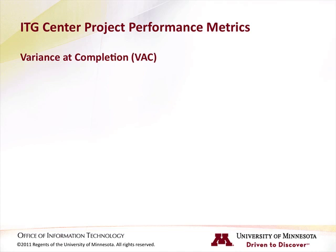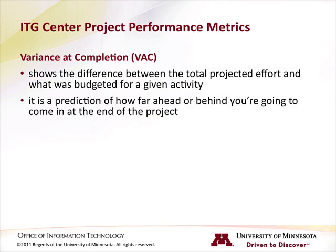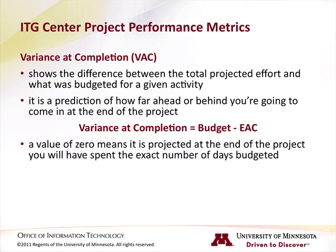Variance at completion, VAC. Variance at completion shows the difference between the total projected effort and what was budgeted for a given activity. It is a prediction of how far ahead or behind we are going to come in at the end of the project. The calculation is: variance at completion equals budget minus estimate at completion. A value of zero means that currently it is projected at the end of the project you will have spent the exact number of days budgeted for an activity.